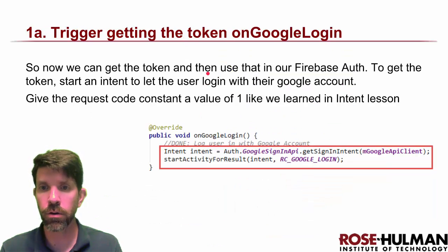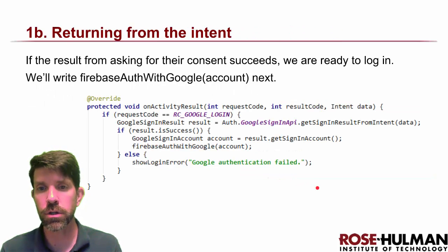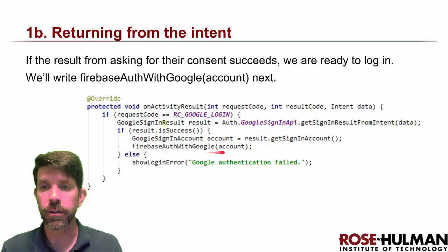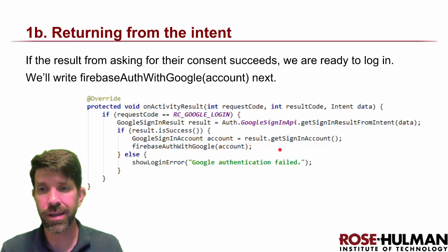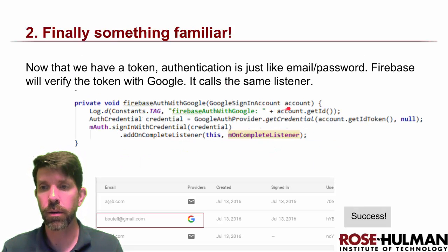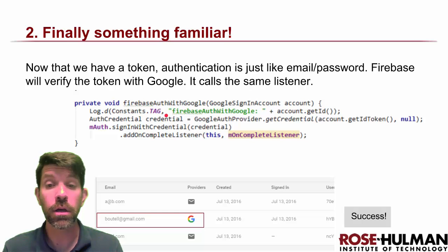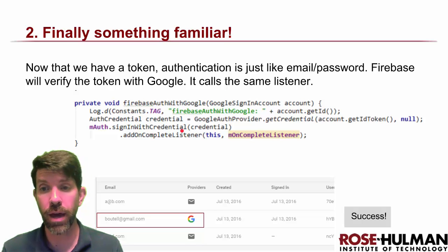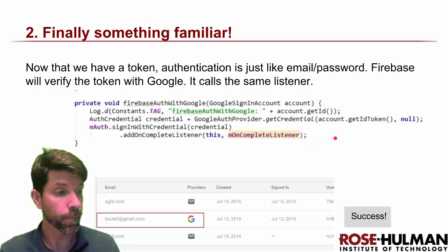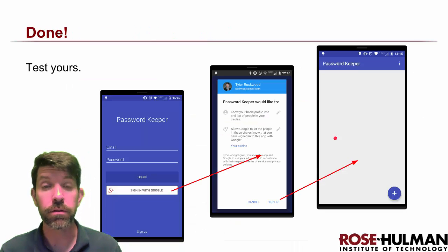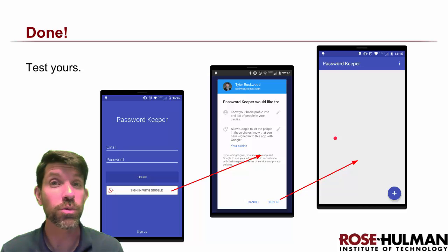To recap: setup was stage zero, then we fired off our intent to interact with the user. When it came back with a result, we got the sign-in account from it and called a helper method with that account. The account had a credential — we called getIdToken to get the credential, then signed in with that credential, very similar to email/password sign-in, and we used the same listener when done. That's it for Google Sign-In — see you next time.